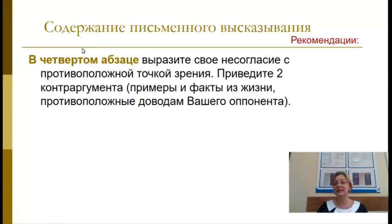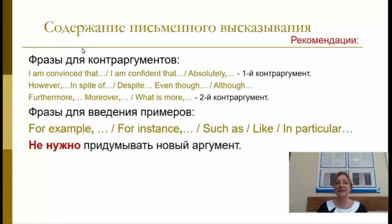В четвёртом абзаце выразите своё несогласие с противоположной точкой зрения. Приведите два контраргумента. Контраргументы — это примеры и факты из жизни, противоположные доводам вашего оппонента. Обратите внимание, какие фразы можно использовать для первого и второго контраргумента. Вводные слова выделяются запятыми. Не забудьте «for example», «for instance». И не нужно в этой части придумывать новый аргумент.